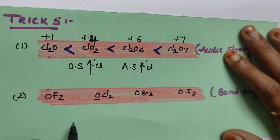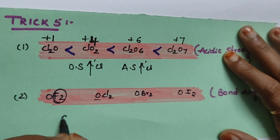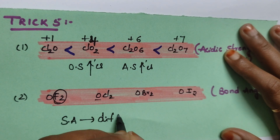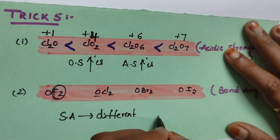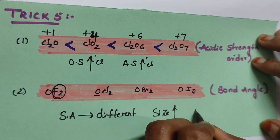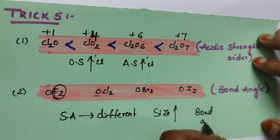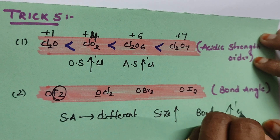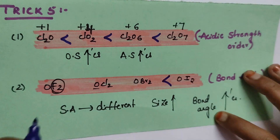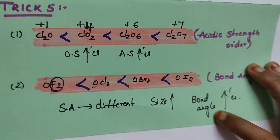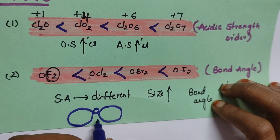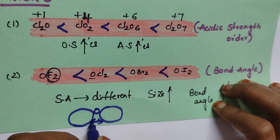If the central atom is the same but the side atoms are different, and the size of the side atom increases, then the bond angle also increases. So which has a larger bond angle? OI2 has a larger bond angle than OBr2, then OCl2 — because iodine is larger in size, repulsions push the atoms away from each other, giving a larger bond angle.